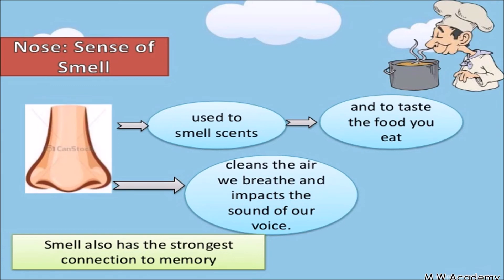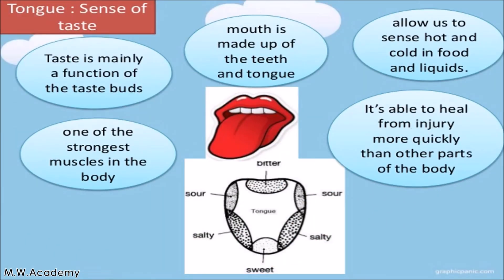Number five: tongue. Tongue gives us a sense of taste. The tongue helps us to know what type of taste something has — whether it is bitter, salty, or sweet. Whatever we eat, our tongue tells us what the taste of that food is.